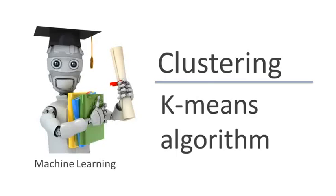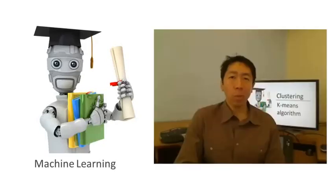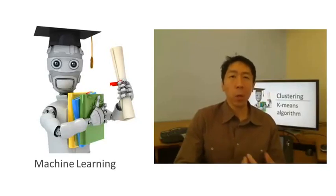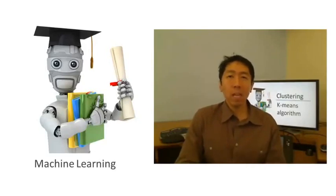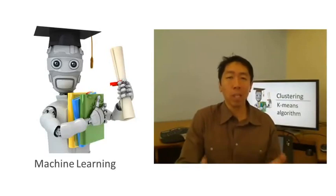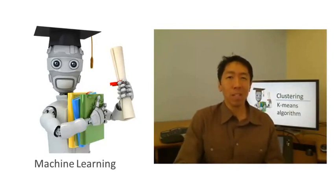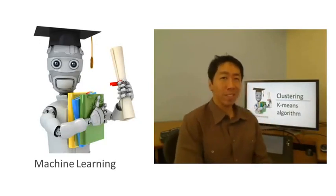In the clustering problem, we are given an unlabeled data set and we would like to have an algorithm automatically group the data into coherent subsets or into coherent clusters for us. The k-means algorithm is by far the most popular and most widely used clustering algorithm, and in this video I'd like to tell you what the k-means algorithm is and how it works.